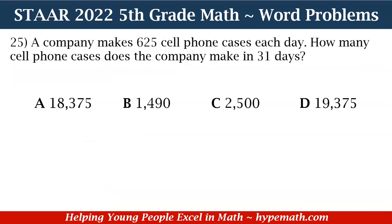Let's dive into number 25. A company makes 625 cell phone cases each day. How many cell phone cases does the company make in 31 days? Is it A — 18,375? B — 1,490? C — 2,500? Or D — 19,375?